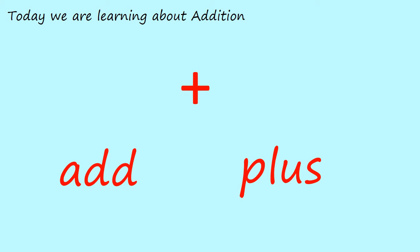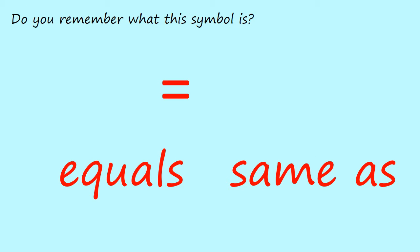Today we are learning all about addition. Do you remember seeing this symbol before? It's the add sign. We also call it plus. So it can be called add or plus. Do you remember what this symbol is? We looked at this last time. Yes, it's the equal symbol. And it can also mean the same as. So whatever is on one side of the equals has to be the same on the other side.